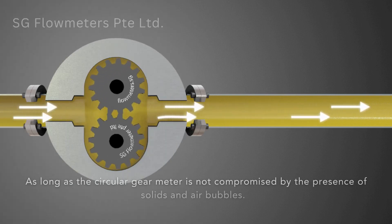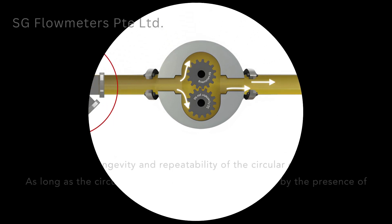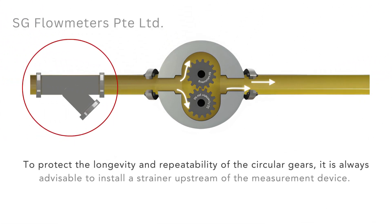As long as the circular gear meter is not compromised by the presence of solids and air bubbles. To protect the longevity and repeatability of the circular gears, it is always advisable to install a strainer upstream of the measurement device.